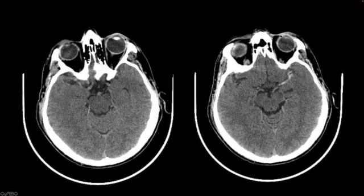Here's that same slice again. And here's a slice just adjacent to that where you can see more of the internal carotid artery, the distal internal carotid arteries. And here's the middle cerebral artery on the right side — you can see it's much less dense, very asymmetrically less dense than this vessel here on the left, which has thrombus in it.